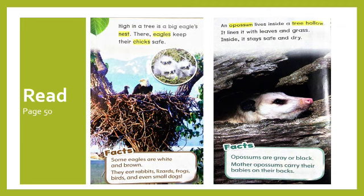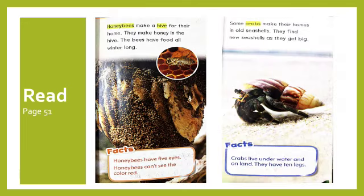Facts: opossums are grey or black. Mother opossums carry their babies on their backs. Honeybees make a hive for their home — they make honey in the hive, and the bees have food all winter long. Facts: honeybees have five eyes, and honeybees can't see the color red. Some crabs make their homes in old seashells — they find new seashells as they get big. Facts: crabs live underwater and on land; they have ten legs.